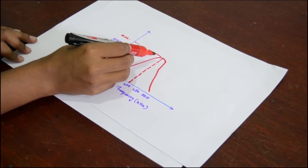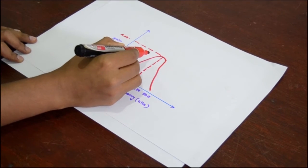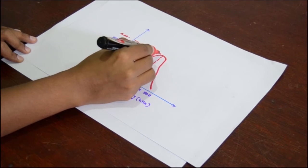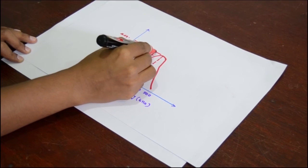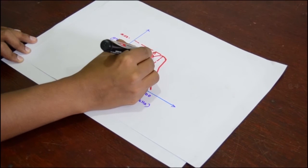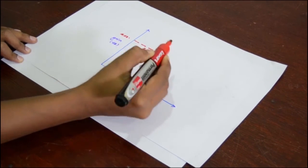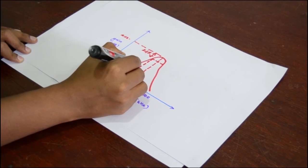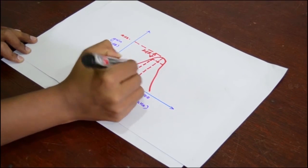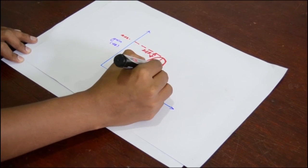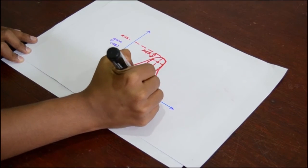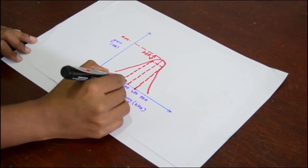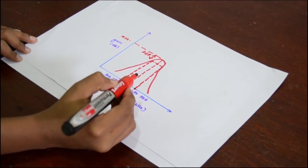We take 3 dB, 3 dB down from the maximum gain frequency. And we find out the lower and highest frequencies. When we take the difference of these frequencies, we get the bandwidth.